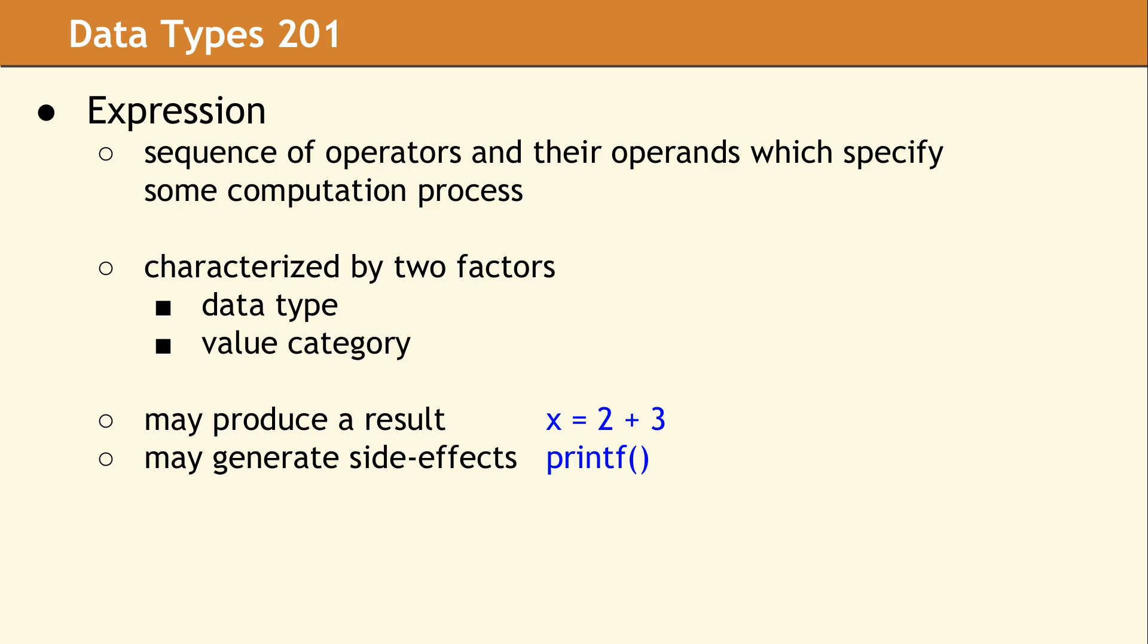So for example, x equals 2 plus 3 is a perfectly good expression. It has a data type and a value category. So is a call to printf. It has a side effect, which is printing data to the screen or whatever your output device may be. But it also has a data type and a value category. It happens to return an integer which denotes the number of characters written.